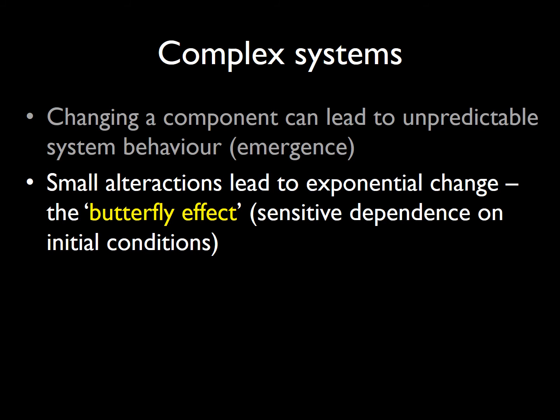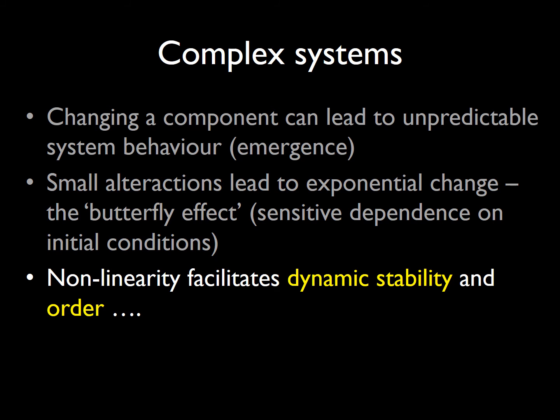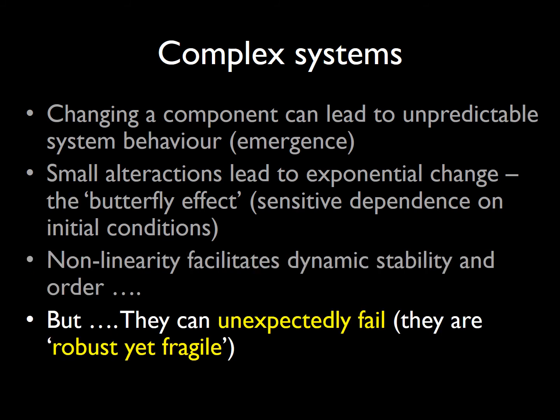This is because of a so-called sensitive dependence on initial conditions, and this is the basis for what has been called the butterfly effect. The butterfly effect is a term coined by chaos theorists suggesting that the flapping of a butterfly's wings in one continent could manifest as a tornado in another, because of the complexity of weather systems. What seems to be a beneficial property of complex systems is that their non-linearity facilitates dynamic stability and the ability to be agile and respond to environmental challenges affecting homeostatic balance. But that dynamic stability can only operate up to a point, and complex systems can then suddenly fail — they are said to be robust yet fragile.